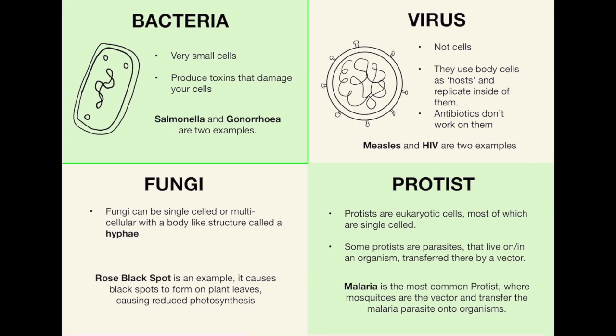Here are the four different pathogens in more detail. On the top left you can see bacteria — that's a bacteria cell in the diagram. They are very small cells and they ultimately produce toxins that damage your cells. Two examples of bacteria are salmonella and gonorrhea. All that information is very important to remember.